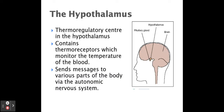In this process we use a part of our hypothalamus — which is part of our brain, you can see it in that image — called the thermoregulatory centre. Within our thermoregulatory centre we have receptors called thermoreceptors, and these monitor the temperature of the blood. They send messages to various parts of the body in order to either increase or decrease our body temperature, depending on what our body temperature is.